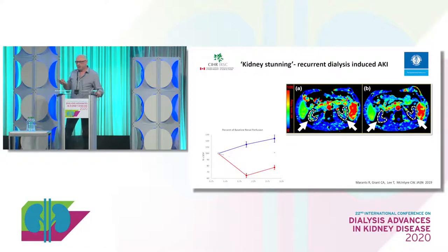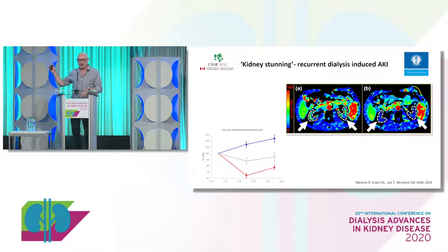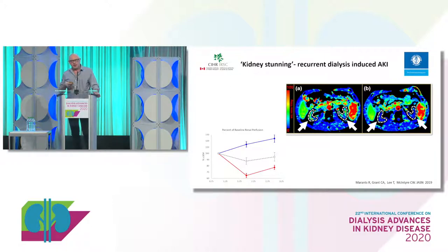Why do we think this has anything to do with dialysis? When we improved the hemodynamics during dialysis — in this case by cooling, which I'll come back to — we were able to partially protect the kidneys from this effect in people who were otherwise being subjected to recurrent ischemia during the treatment.